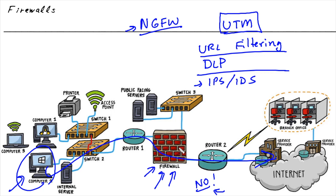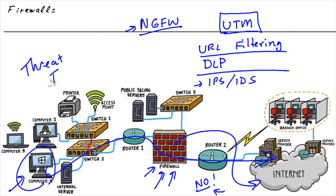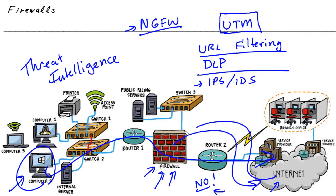Another benefit of next generation firewalls is that they can receive intelligence and learning from the cloud. For example, if there's a new attack coming from some country overseas that has been identified by other sensors and firewalls, information about the block of IP addresses or the attack type can be fed dynamically to our firewall. With that threat intelligence, if the firewall sees traffic coming from those source addresses, it can drop it or flag those packets with higher suspicion before letting them through the network.